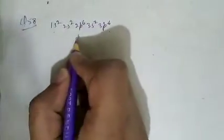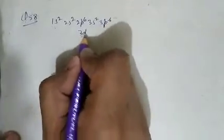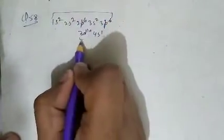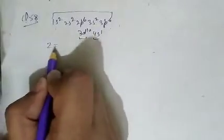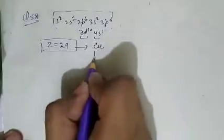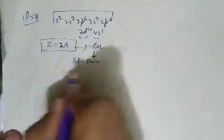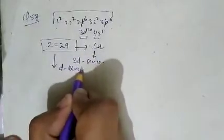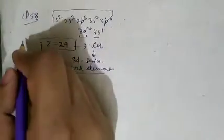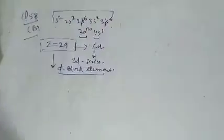Question number 58: the metal having electronic configuration 1s² 2s² 2p⁶ 3s² 3p⁶ 3d¹⁰ 4s¹. This gives Z = 29, which is copper. Copper is a 3d series element and the last electron enters the d orbital, so it is a d-block element. Question number 58, option B is correct.